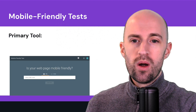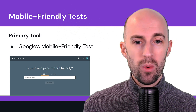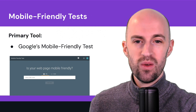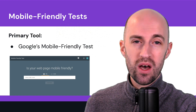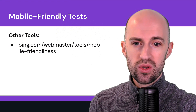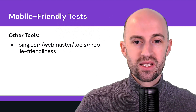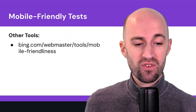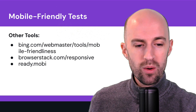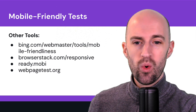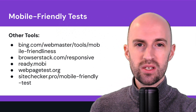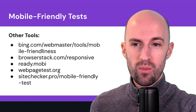The primary tool for mobile friendly tests is Google's Mobile Friendly Test — just search it, put your URL in, and it will tell you if it's mobile friendly or, if not, what to improve. Other tools include Bing's version at bing.com/webmaster/tools/mobile-friendliness, BrowserStack.com/responsive, ready.mobi, webpagetest.org, and sitechecker.pro/mobile-friendly-test. All of these are great resources for your mobile friendly testing.